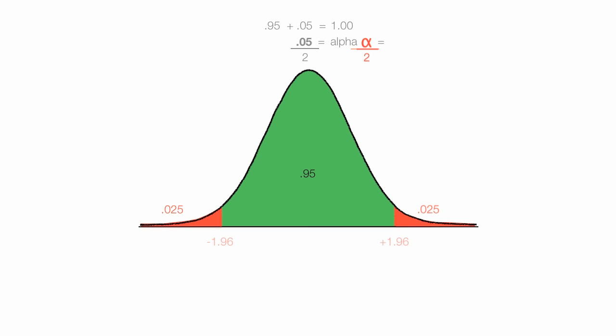So you'll often see this alpha divided by 2 written like this, and put in both tails. This alpha divided by 2 appears in equations like the confidence interval. And that's where that alpha divided by 2 comes from, because we're doing a two-tail test.